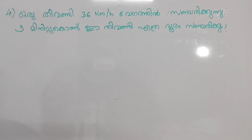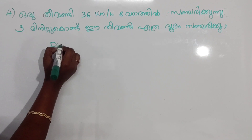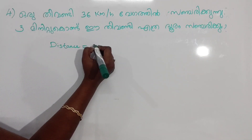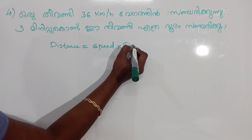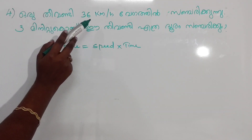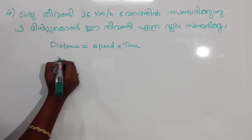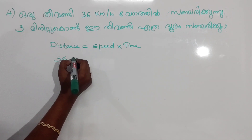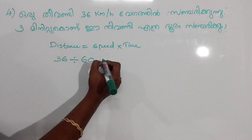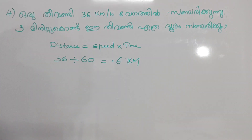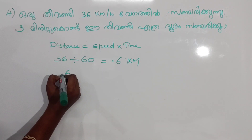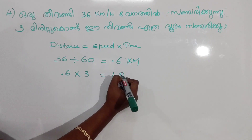You have to be very careful with units — the speed is 36 km per hour and the time is 3 minutes. The equation is Distance = Speed × Time. Be careful: the unknown distance here is 0.6 km, that is 3.6 × 3.8 km.